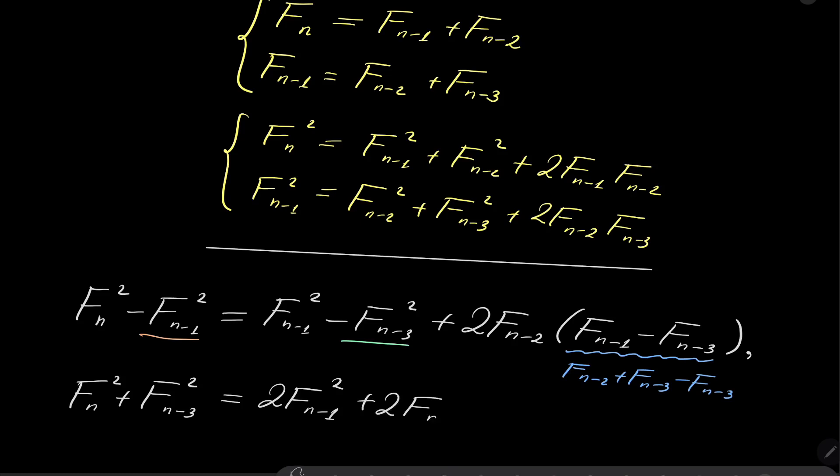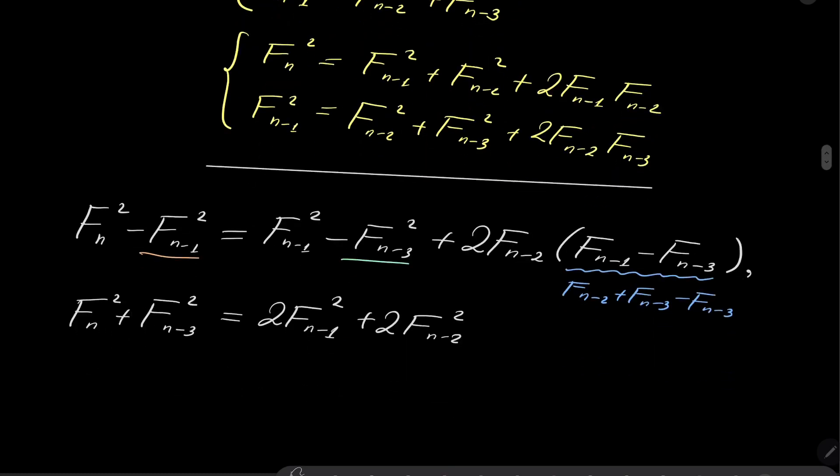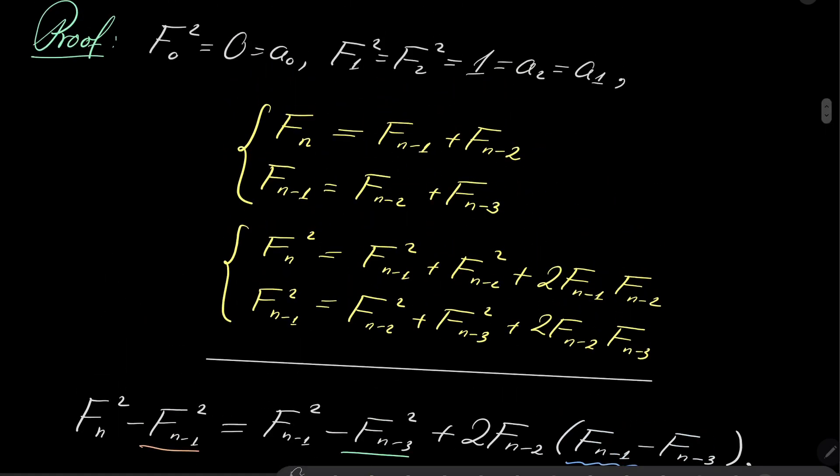2 times F_{n-2} squared. And if you look closely, it's the very same recursion for our sequence A_n, but without squares, of course.